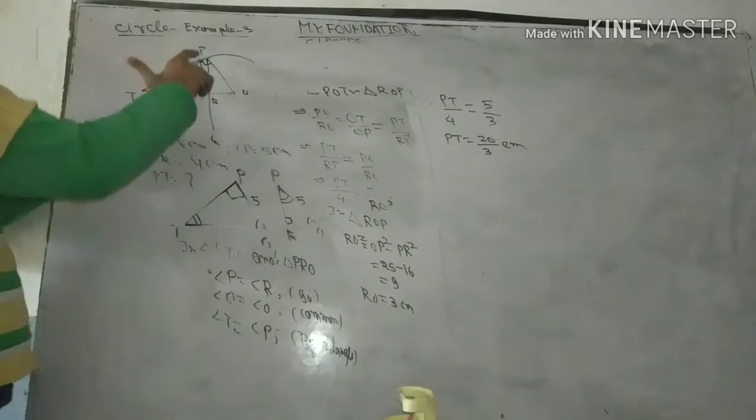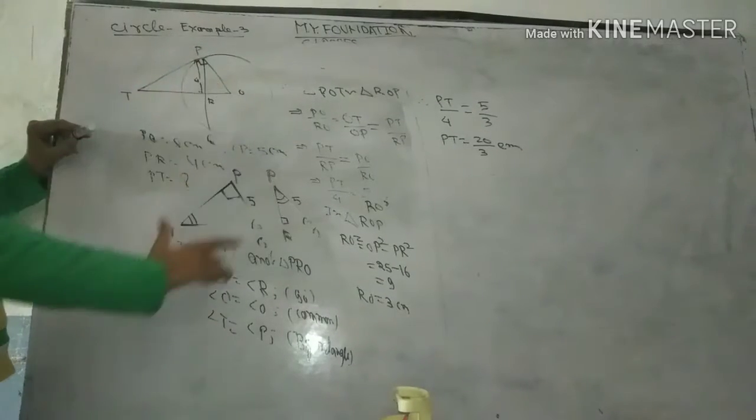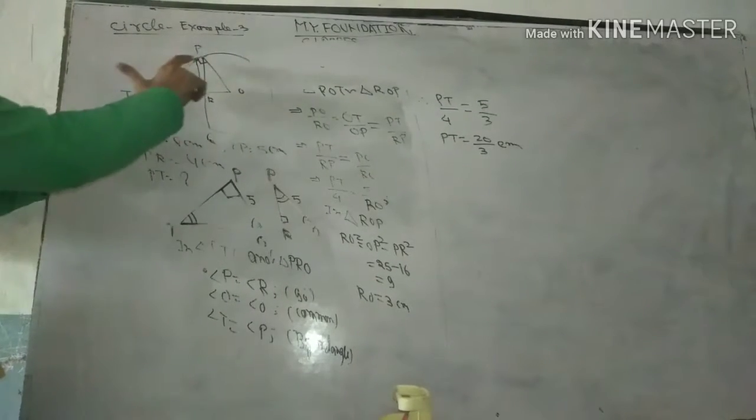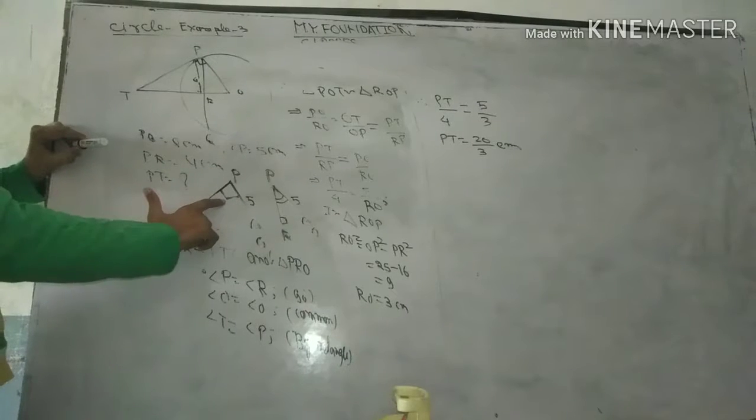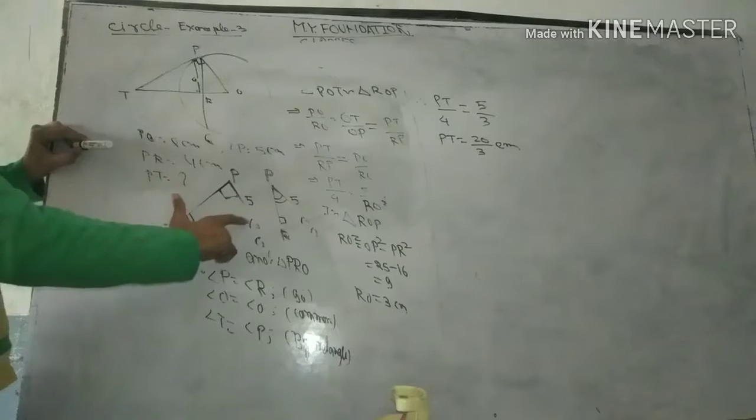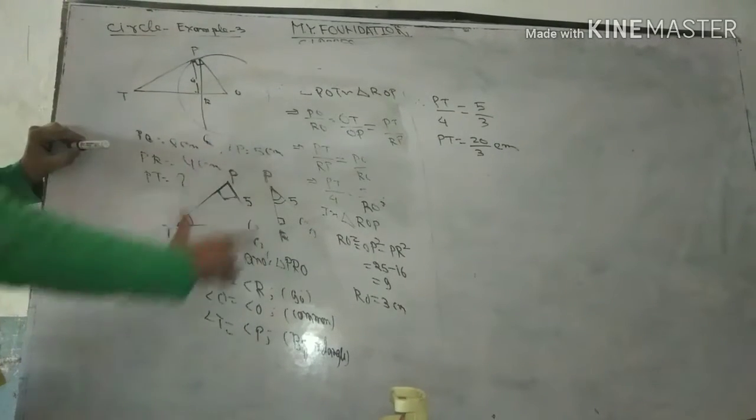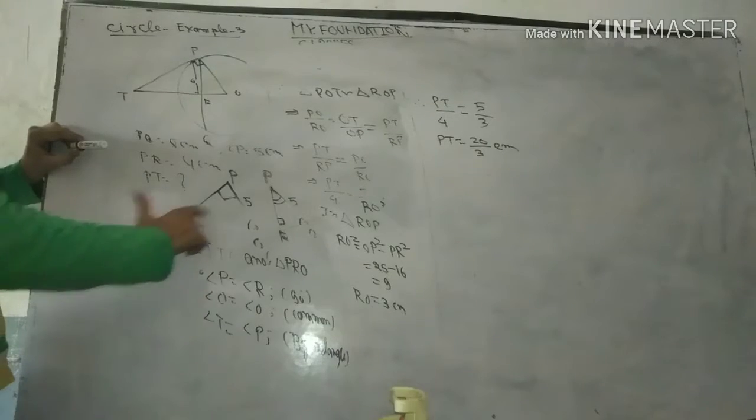This is triangle PTO and triangle PRO. Angle P is 90 degrees. Both triangles are right-angled. Angle R is equal to 90 degrees. Angle O and angle O are common because they are at the same place, and the right angles are equal.